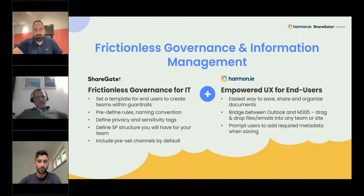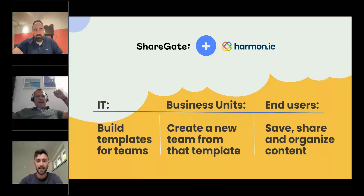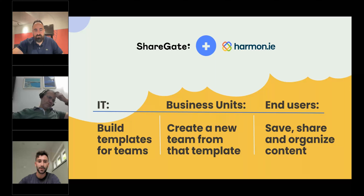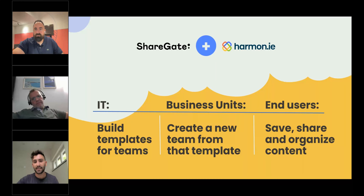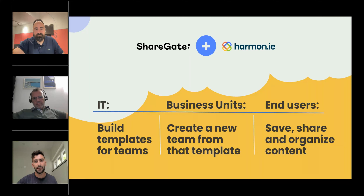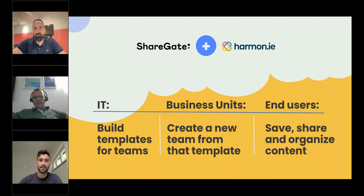There are three parts to this demo. First, we'll show how you'd set up a team template in Sharegate — this is more of an admin task. Then we'll talk about how a business unit can create a team from that template. Finally, we'll talk about how end users can save, share, and organize content in and out of those teams, how they can add metadata at the time of saving, and how they can easily use and engage with the content that's been set up.